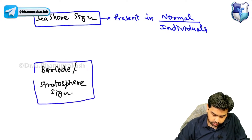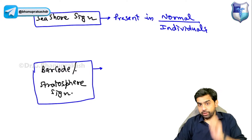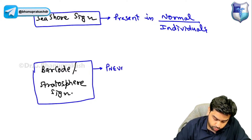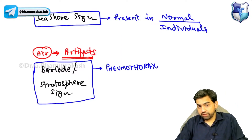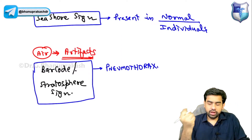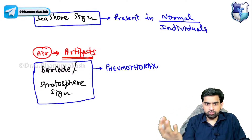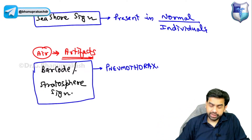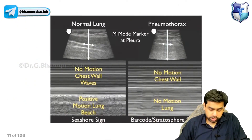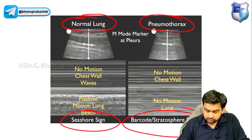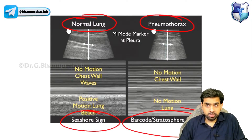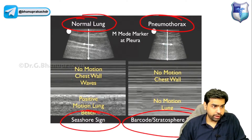The barcode or stratosphere sign is basically present in patients who have pneumothorax. Air creates a lot of artifacts, and because of these artifacts they appear like a barcode or stratosphere pattern. So in summary: normal lung gives a seashore sign, while pneumothorax gives a barcode or stratosphere sign.